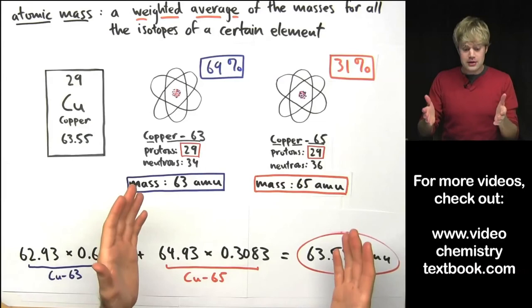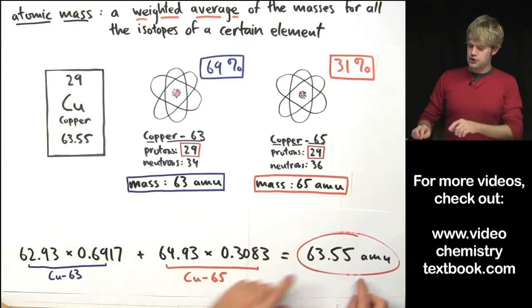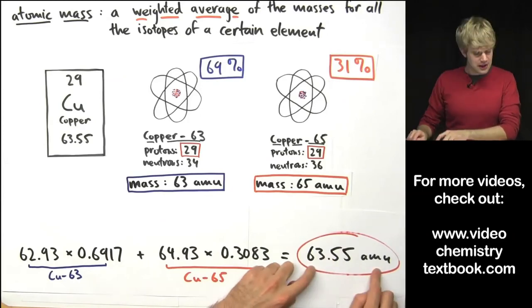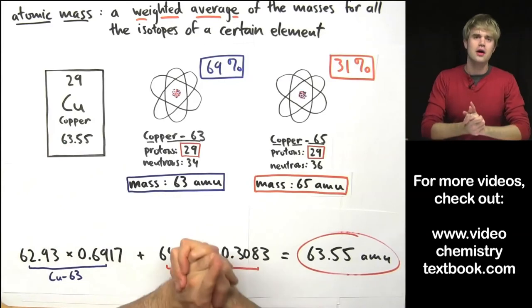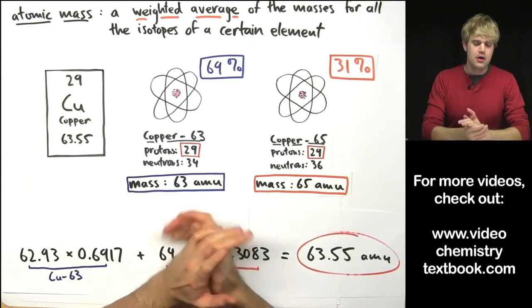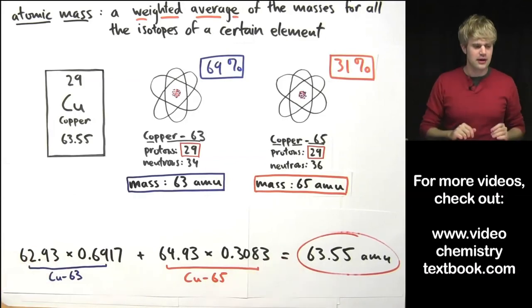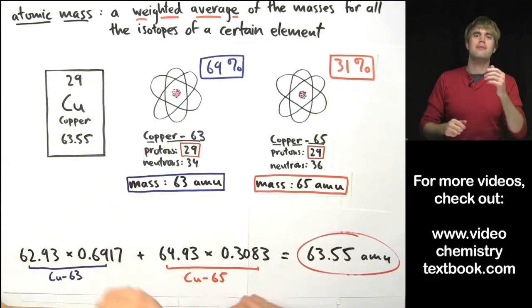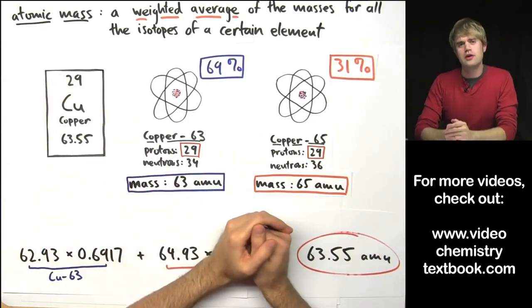But the point is when you do take these numbers into account and you do the weighted average calculation you end up with an atomic mass in AMU that is exactly the same as what you find on the periodic table. So, now that you understand what a weighted average is, how to calculate it, and how to work through atomic mass, you're ready to check out the practice problems on this topic in other videos.